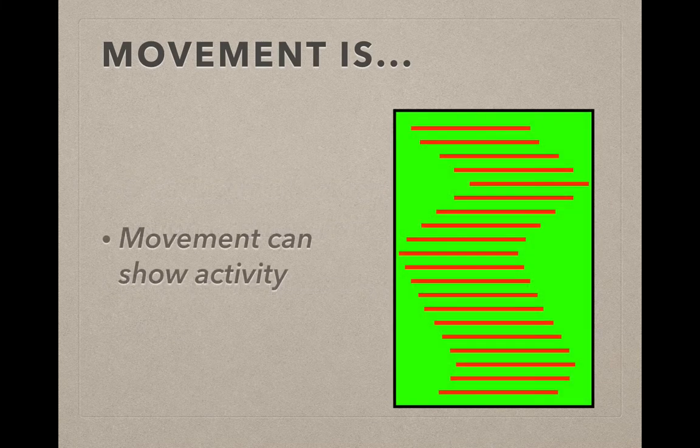So in the example here, the movement can show activity, but it's also drawing your eye through from top to bottom. It moves in a zigzag because those red lines move back and forth in the image.